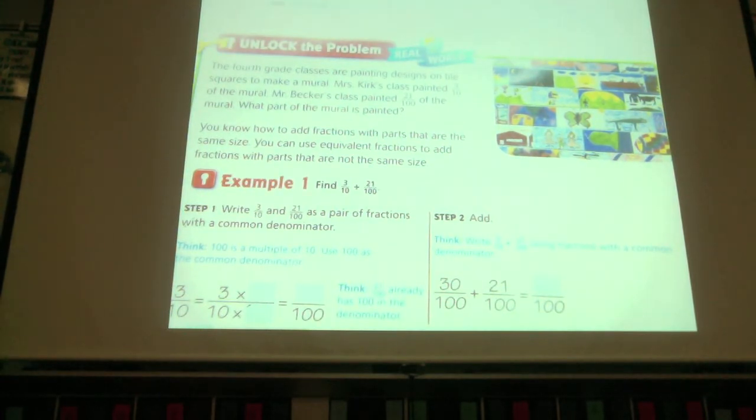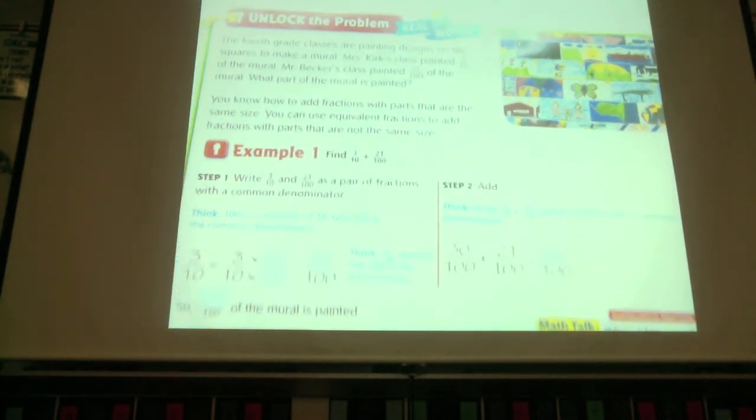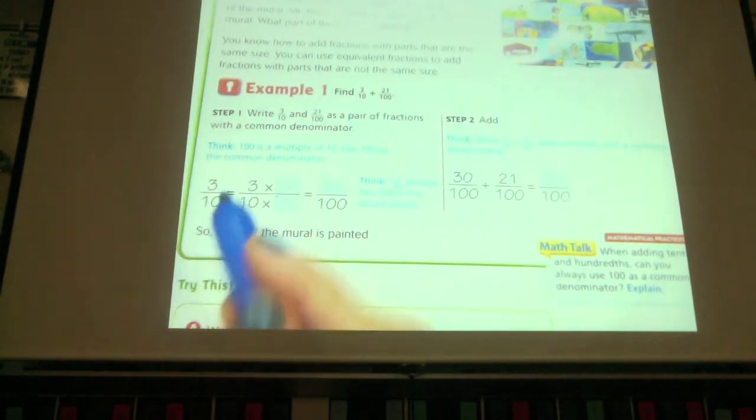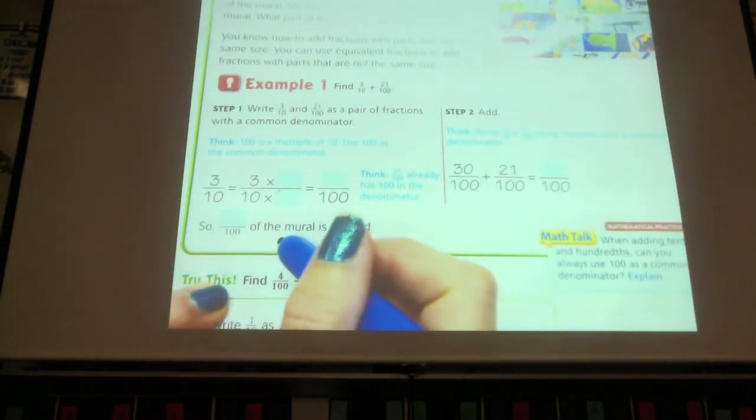Can I just add the numerators on those two? No. Why can't I just add the numerator? Luna. They're different parts. The denominator shows that they're different sized parts. So, can I find a way to add these two? Yes. Ethan, what should I do to add these two? You can change the three tenths to a hundred. Okay, so I can change the three tenths. I can change tenths to hundredths.